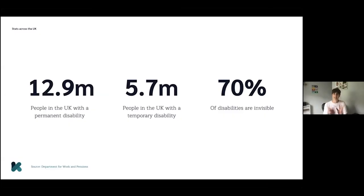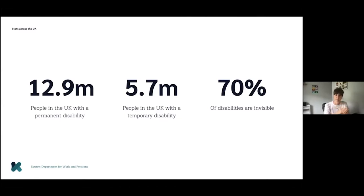Before we get into the details of how we work at Kooth, I wanted to take a moment to step back and look at the impact of disability in the UK. Right now, almost 13 million people are living with a permanent disability, 5.7 million people in the UK have a temporary disability, and 70% of disabilities are invisible. It's really important to be aware of how many people are actually impacted by this when we talk about accessibility and the work that we do.